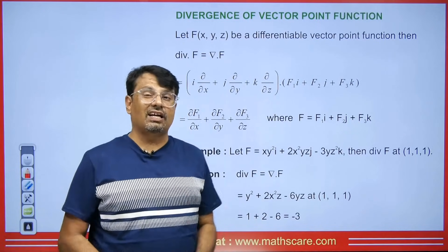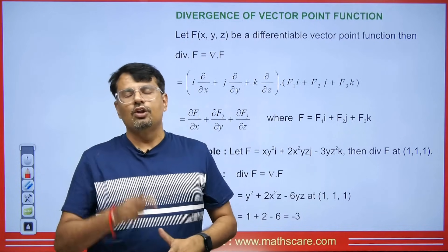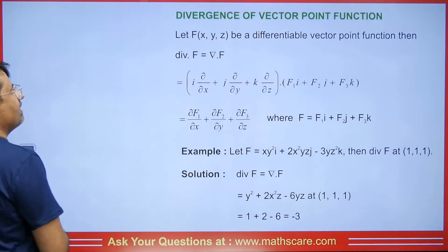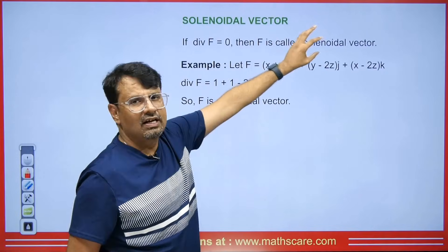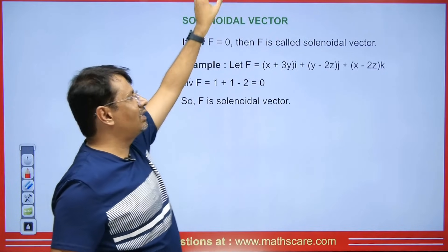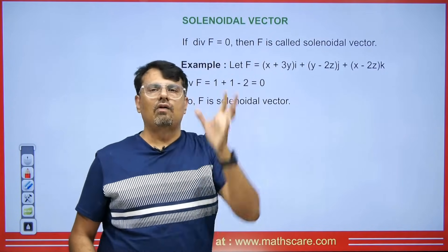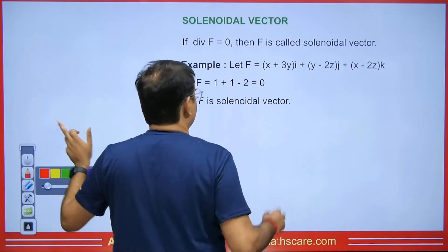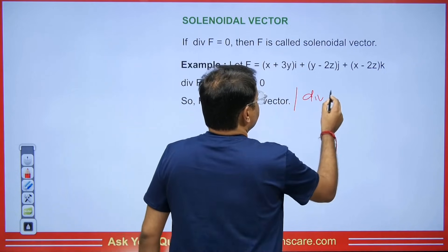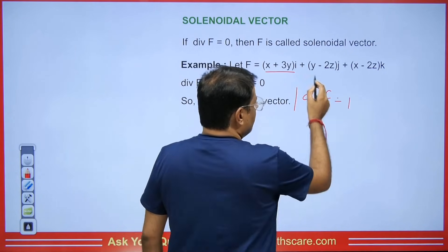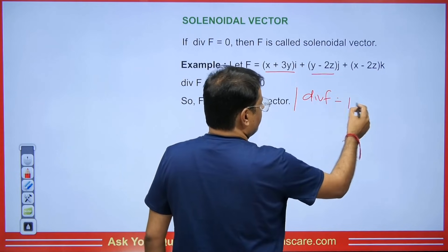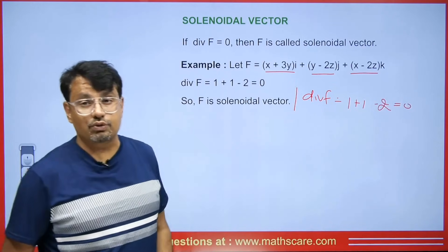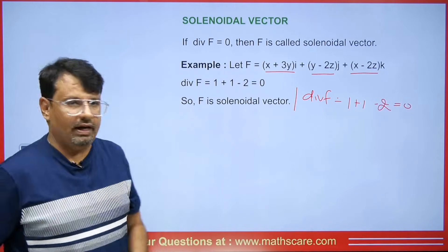Now, if we have a vector point function and its divergence becomes 0, that vector point function is called a solenoidal vector. A similar question is asked in exams: if the divergence of f equals 0, then f is a solenoidal vector. For example, if we find the divergence of a given f and the derivative of the i-component with respect to x is 1, the j-component with respect to y is 1, and the k-component with respect to z is −2, the result is 0, so f is a solenoidal vector.